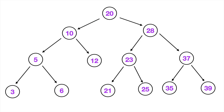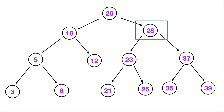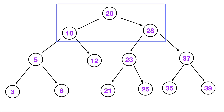A binary search tree is just one particular type of tree, and being a binary search tree, there are certain rules that it follows. If you look at the child to the left of the root node, you can see we have a node with the value of 10. And if you look at the child to the right of the root node, you can see that we have a node with the value of 28. The child node on the left needs to be of a lower value than the parent node, and the child node on the right needs to be of a higher value than the parent node.